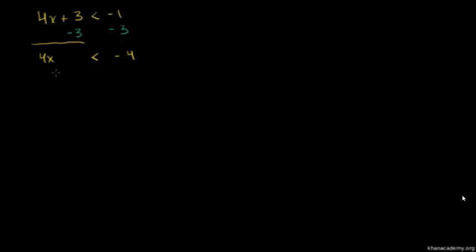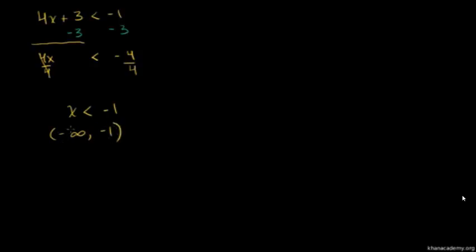Now we divide both sides of this equation by 4. When you multiply or divide both sides of an inequality by a positive number, it doesn't change the inequality. So the left hand side is just x. x is less than negative 4 divided by 4, which is negative 1. Or in interval notation, all of the x's from negative infinity to negative 1, but not including negative 1, so we put a parenthesis right there.